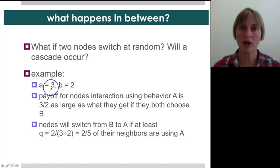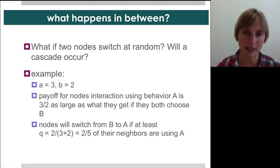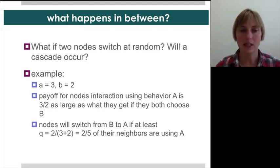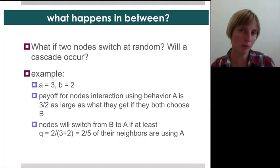Let's say that the payoff for playing basketball with a friend is three, and the payoff for playing soccer with a friend is two. And we have the, the payoff, that means that the payoff for nodes who are both playing basketball is three halves as large as what they get if they both choose to play soccer. So you get like a 50% greater payoff. And this also means that nodes will switch from soccer to basketball if at least two-fifths of their friends are playing basketball. So it means that you don't, it can be a minority. It can be two-fifths of your friends who are playing so much more appealing than soccer that you will switch once you pass that threshold.